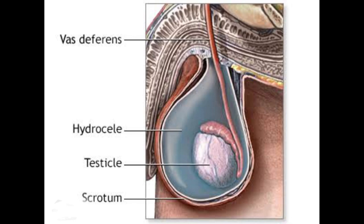You can see the testicle and you can see the scrotum and appreciate the vas deferens. This diagram shows the collection of fluid in between the testicle and the tunica vaginalis, which is called the hydrocele. In infantile hydrocele, the treatment is either operative or conservative.